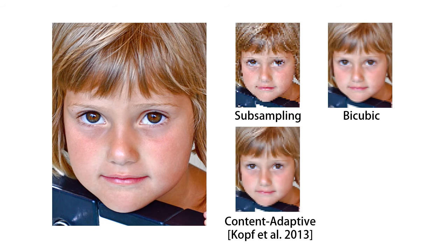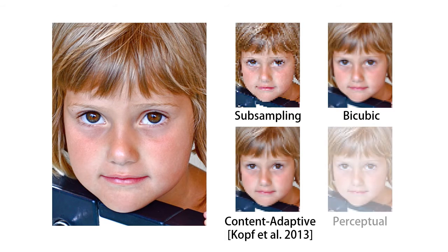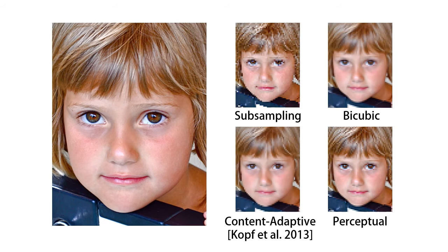In contrast, we propose a perceptually motivated method that generates a perceptually better depiction of the original image. To obtain this, we formulate downscaling as an optimization problem where the difference between the original and downscaled images is measured by a perceptual metric.